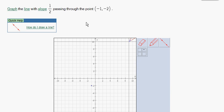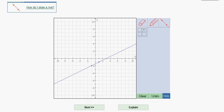So simply go to your point, count 1 up because that's your rise of positive 1, and 2 to the right, that's going to be your run of 2. Always count the run to the right. Grab your line, click, click, and we should be good to go.